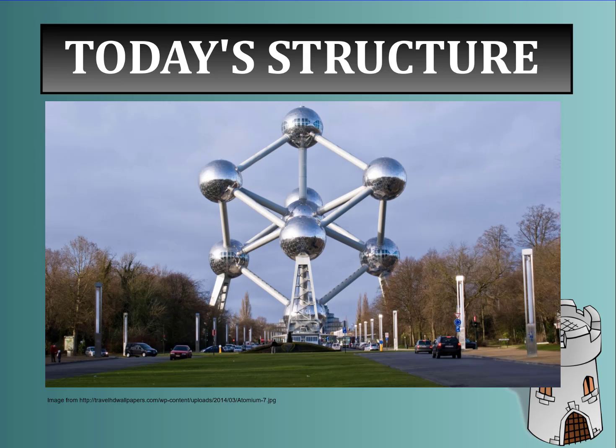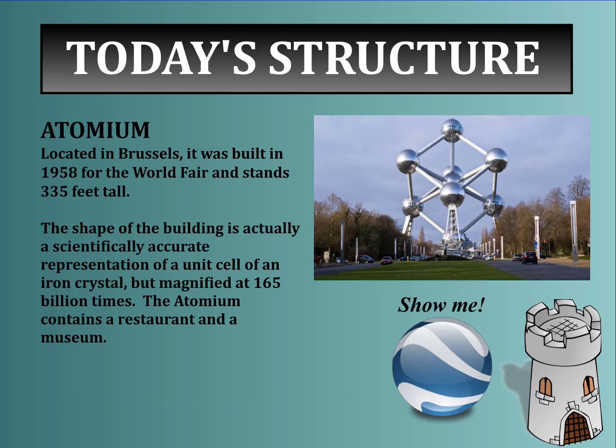Our structure of the day is a bit of a weird one, and it still exists today. It's located in Brussels and was built in 1958 for the World Fair. It stands 335 feet tall and is called the Atomium. The shape of the building is actually a scientifically accurate representation of a unit cell of an iron crystal — if you magnify an iron crystal by 165 billion times, you get this structure.